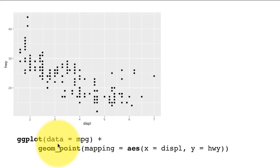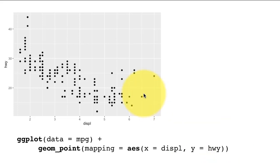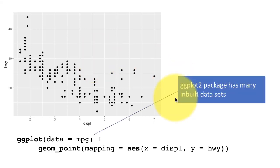Everything you see here — the gray background, the light grid lines — is default. We can change those, but seldom do we need to. The ggplot2 package has many built-in data sets, and mpg is just one of them, so there's no need to read it from a file. This scatter plot is generated by the call to ggplot plus the call to geom_point.